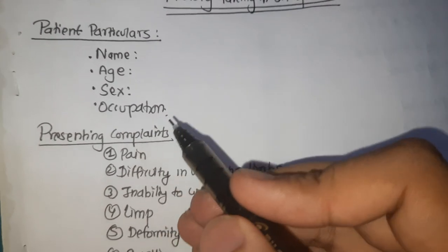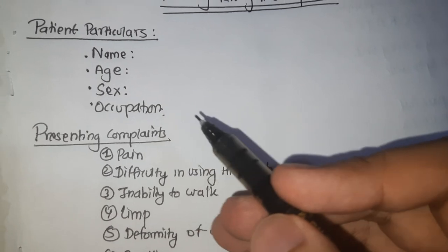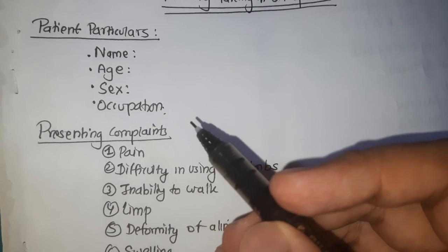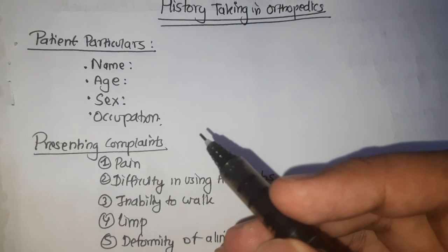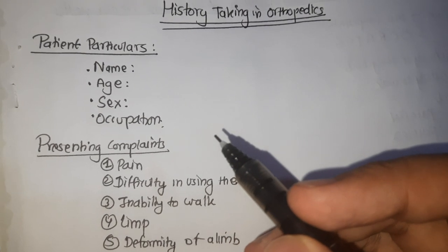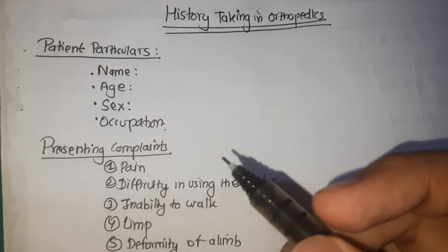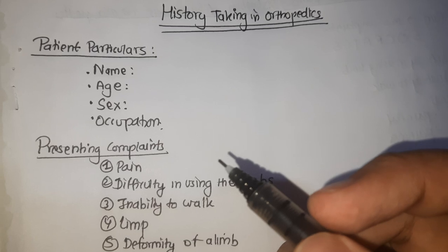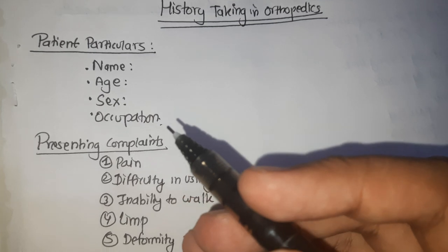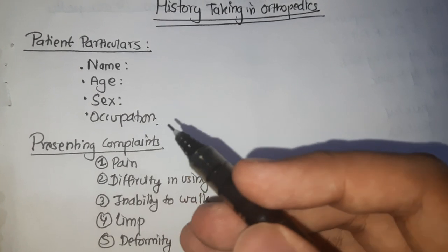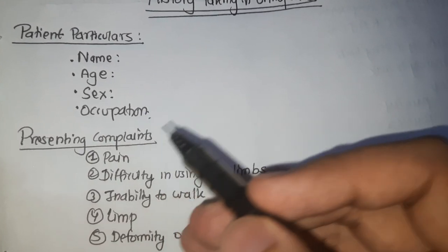Occupation is very important in orthopedics. A number of complaints can be traced back to the kind of occupation. For example, a patient required to bend forward and lift weight may develop back strain. In cases where cure is not possible, physical requirements of the patient become the basis for deciding treatment. A slight limp may be acceptable for a sedentary person but very disabling for a heavy manual worker. Lifestyle habits, like sitting on the floor, may also be important in treatment planning.